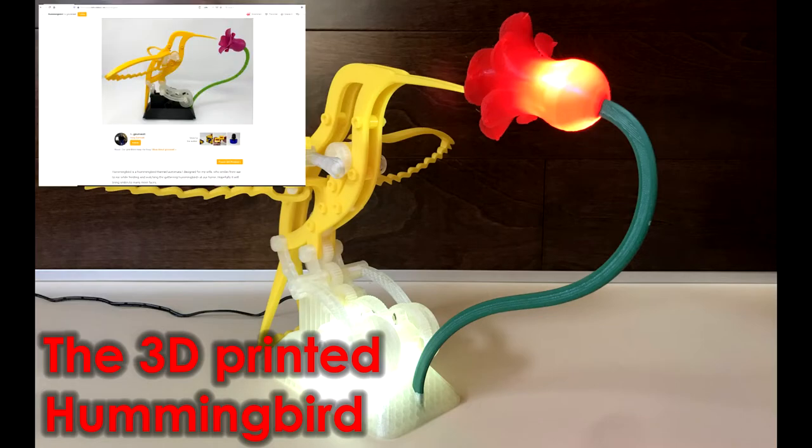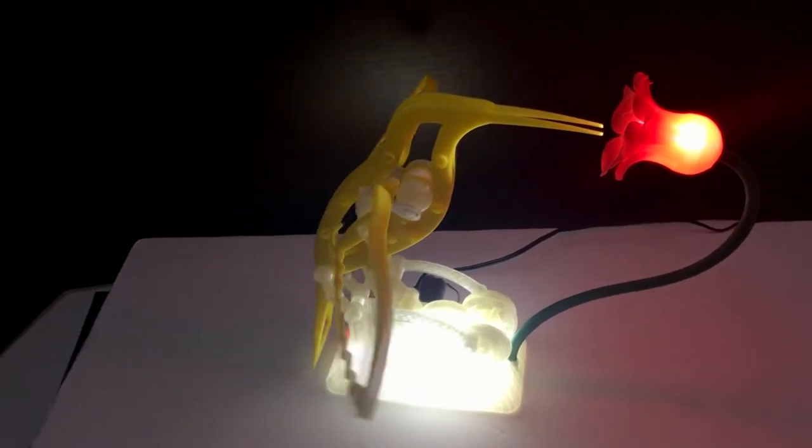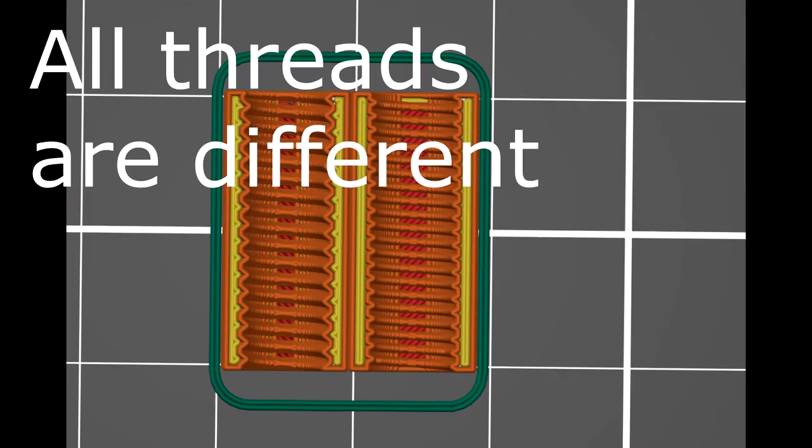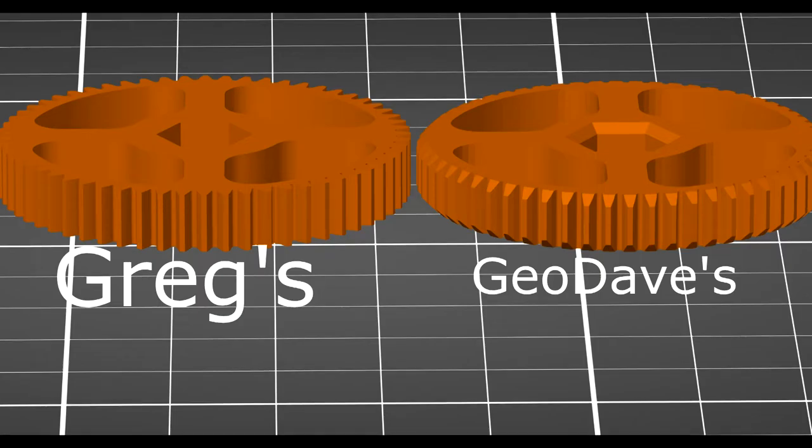This is the 3D Hummingbird project designed by Greg Zumwalt, and I printed the remix by Geo Dave. When you go to print this project, you need to decide whose parts you're going to use. Geo Dave's parts are not necessarily interchangeable with the original parts. He made some modifications to make it easier to print and also gave you files that you can modify.